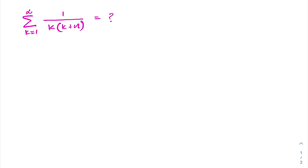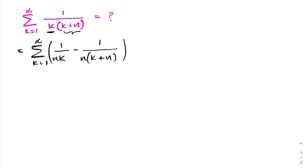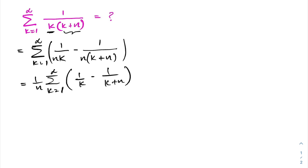How to begin? First, let's find the partial fractions. We can write the sum of k equals 1 to infinity. Taking k and plugging in 0, we get 1 over n, so the first term is 1 over n times k. Then taking k plus n and plugging in minus n, we get minus 1 over n. So we can factor out 1 over n in front of the sigma notation, giving us 1 over n times the sum from k equals 1 to infinity of 1 over k minus 1 over k plus n.